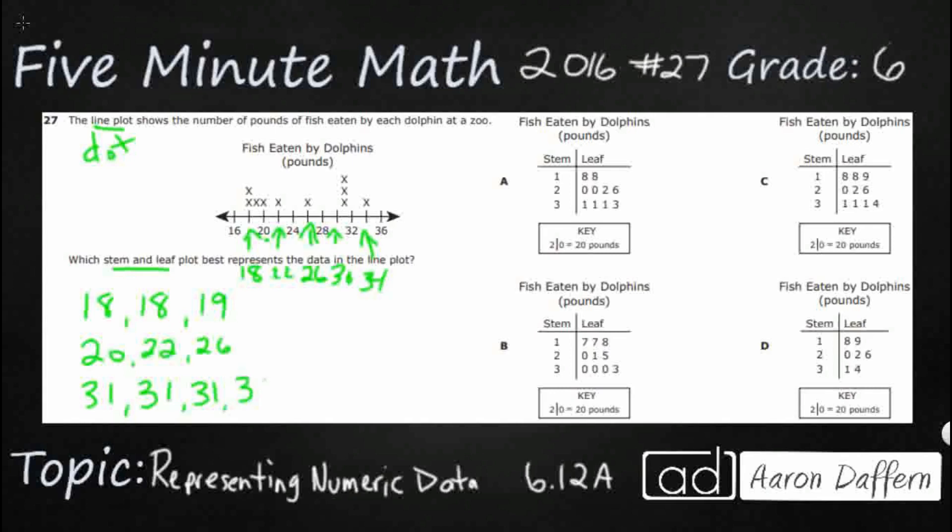So here's my data set right here: I've got 18, 18, 19, 20, 22, 26, 31, 31, 31, 34. The reason I wrote it like this is because this is very similar to how a stem and leaf plot works.